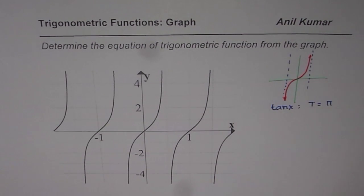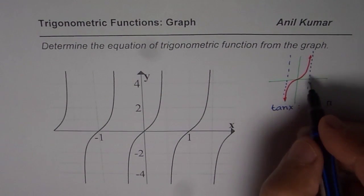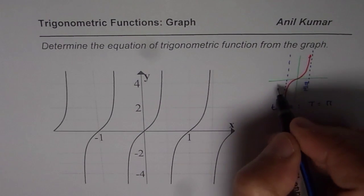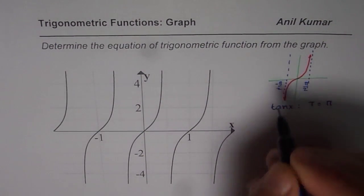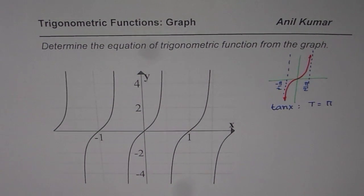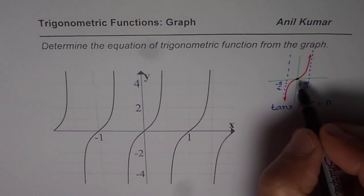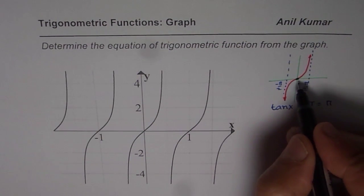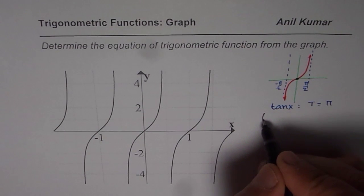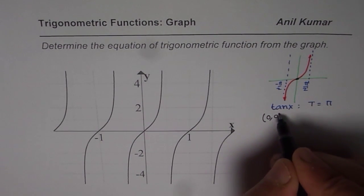This is the base function. So asymptotes are at π/2 and at minus π/2. Critical points which we should consider when we are talking about tan functions are basically three points which are at 0 - always the value of the tan function is 0. So one point is at 0 we have 0.